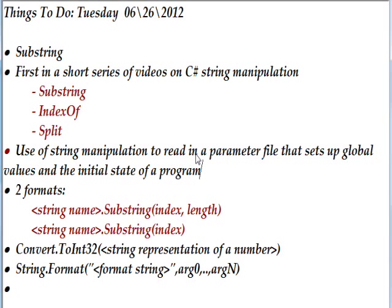Two other functions of interest shown in the program are Convert.ToInt32, with a parameter of a string representation of a number — so if you have a number like 123, it'll take it from being a string and convert it to an integer. The other one is String.Format, where the first parameter is a format string in quotation marks containing placeholders like {0} and {1}, which map into arguments that come after the string. This is identical to console.WriteLine with a format string that we saw when writing console programs.